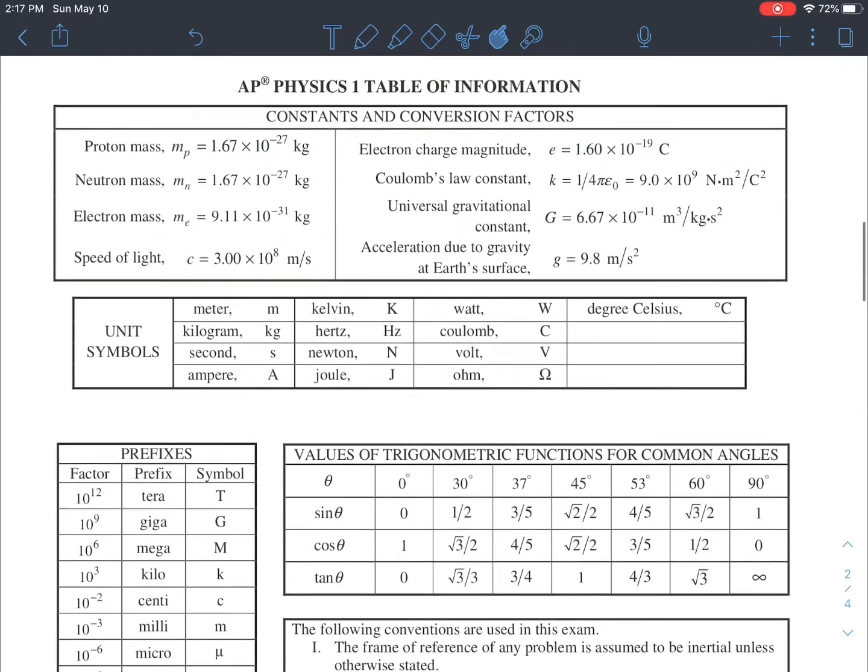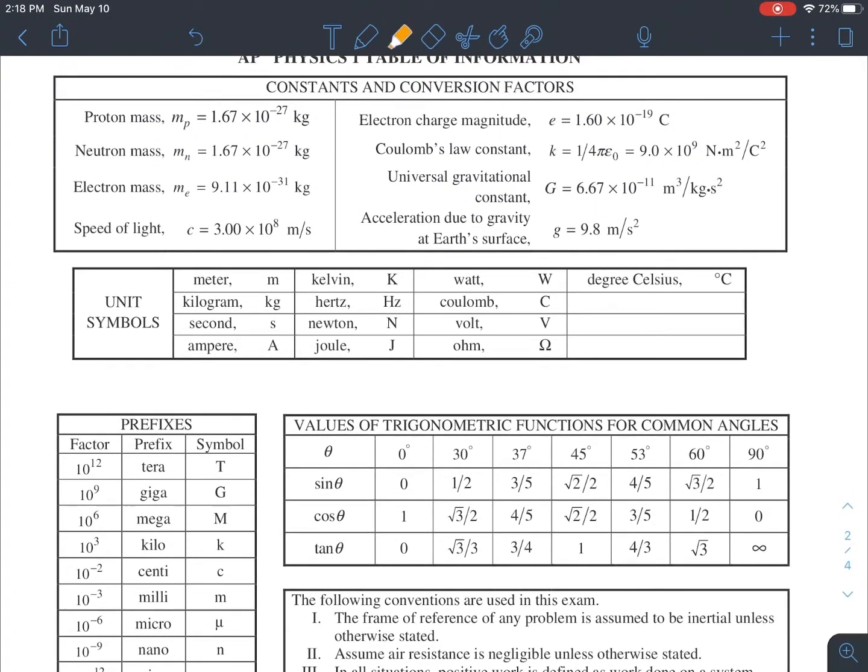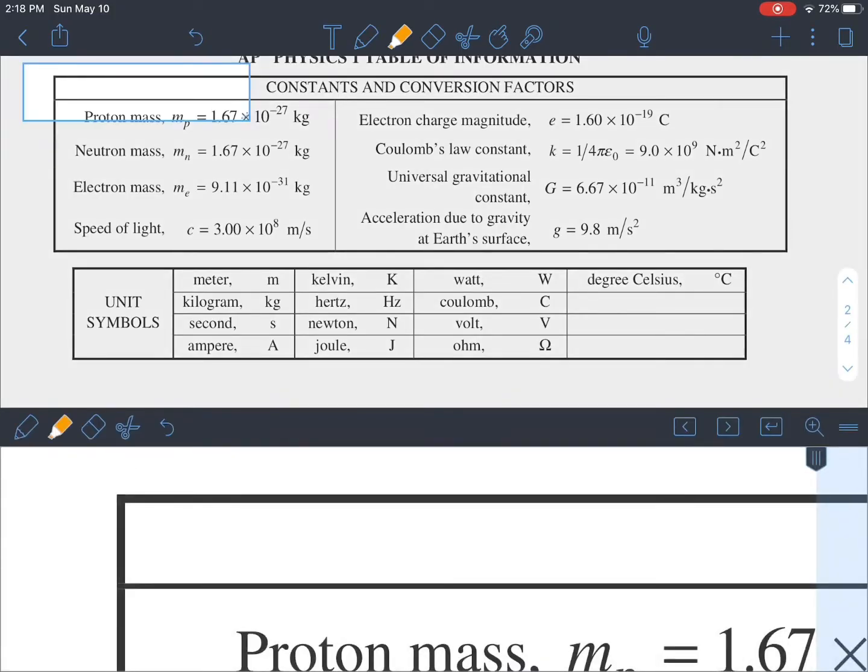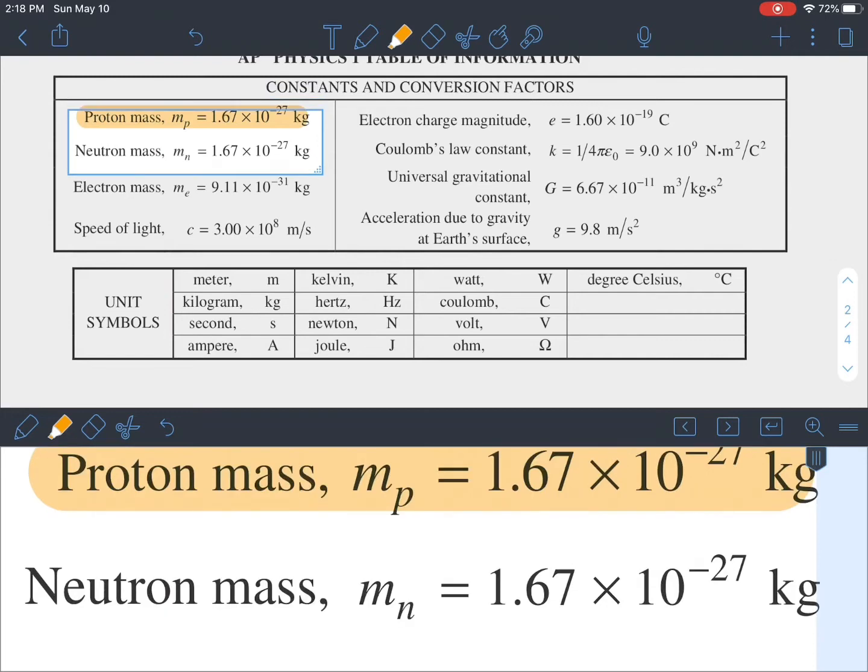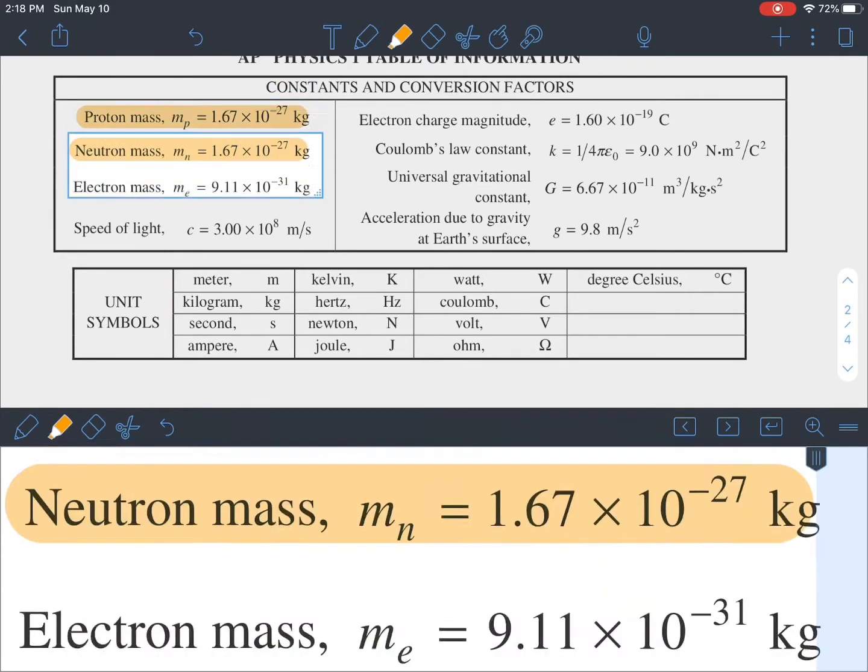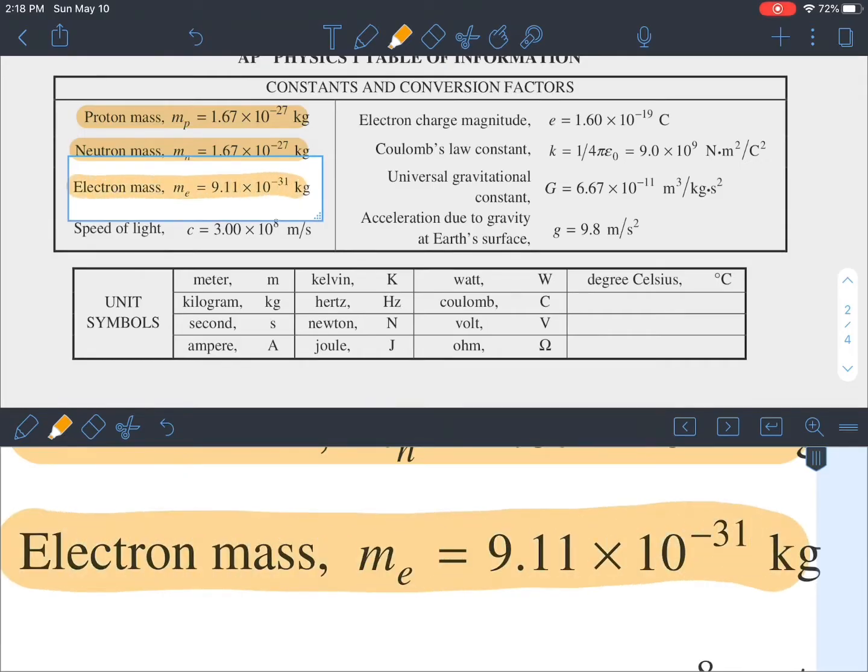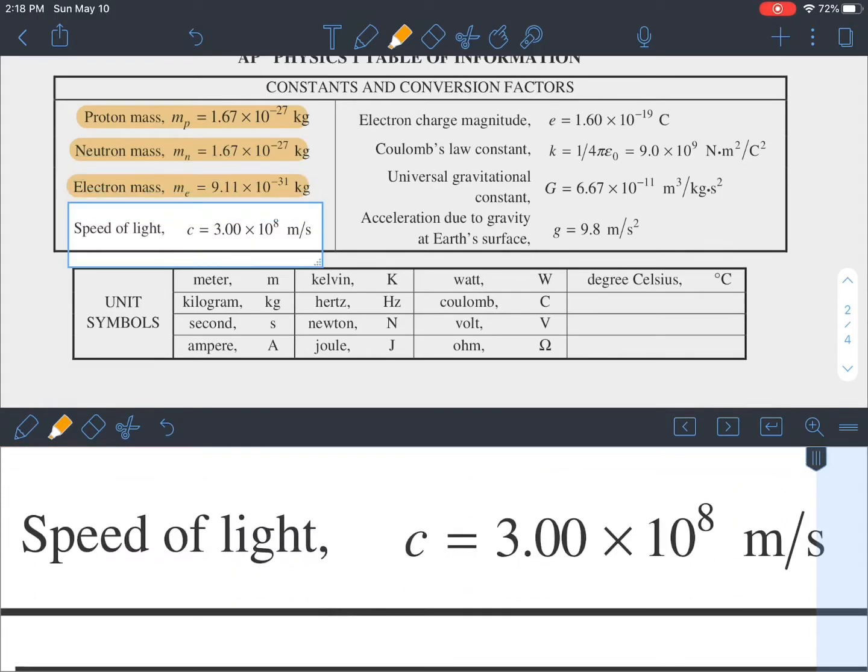First we're going to take a look at the constants and conversion factors. These first three here are the mass of the proton, neutron, and electron. Sometimes when you get problems asking about speeds of objects, they'll ask about electrons rather than cars. In the cases of using particles, they expect you to be able to just find the mass.